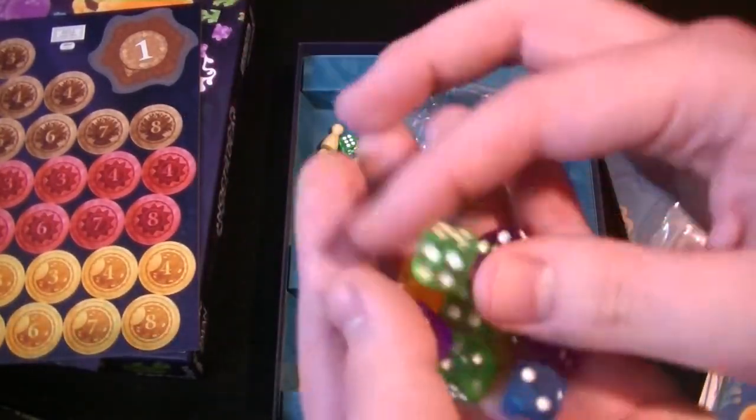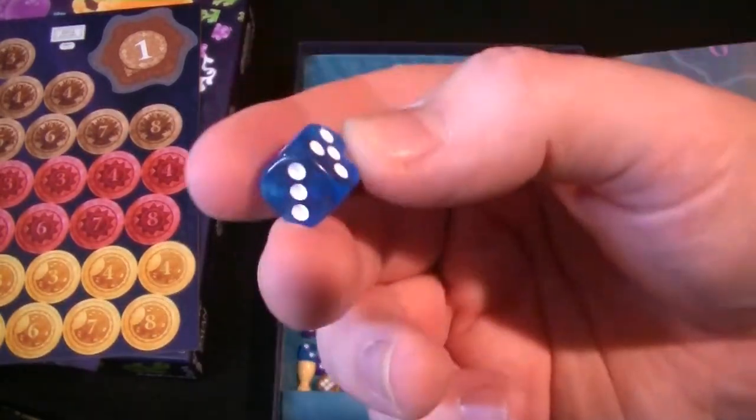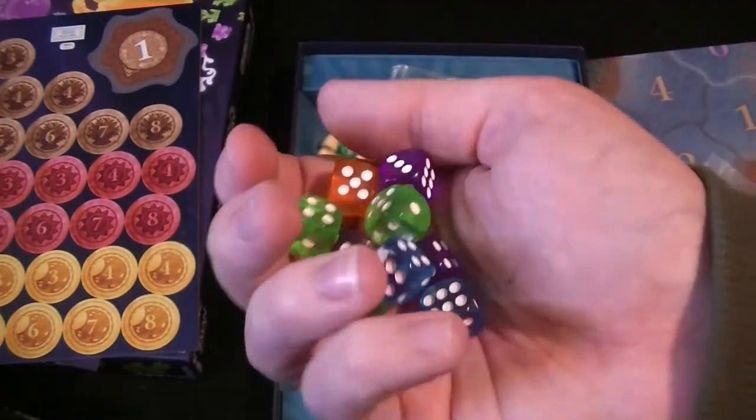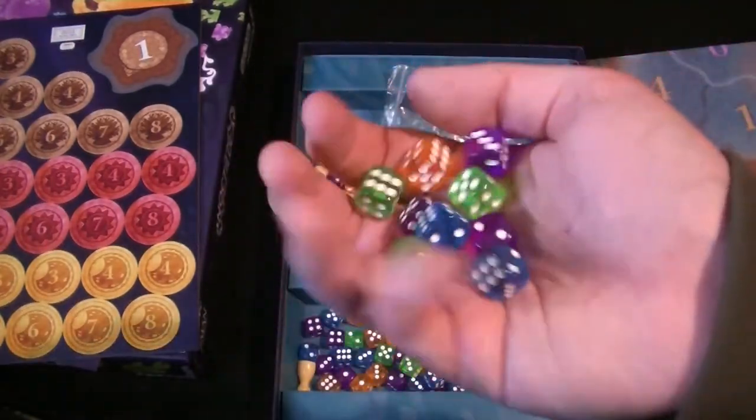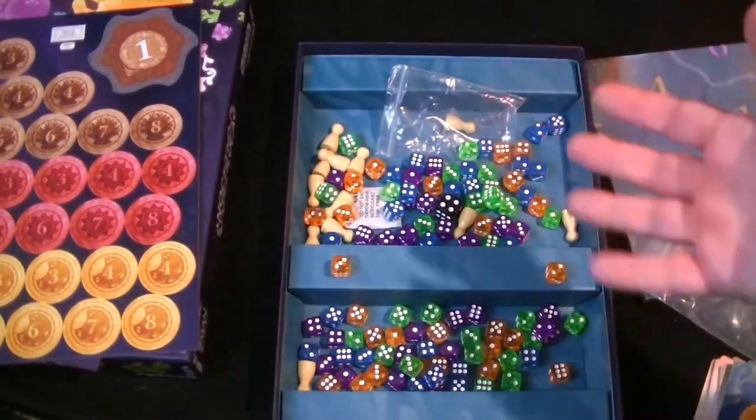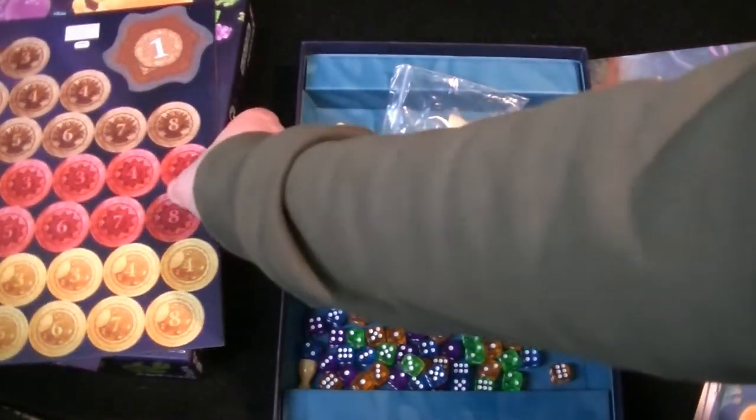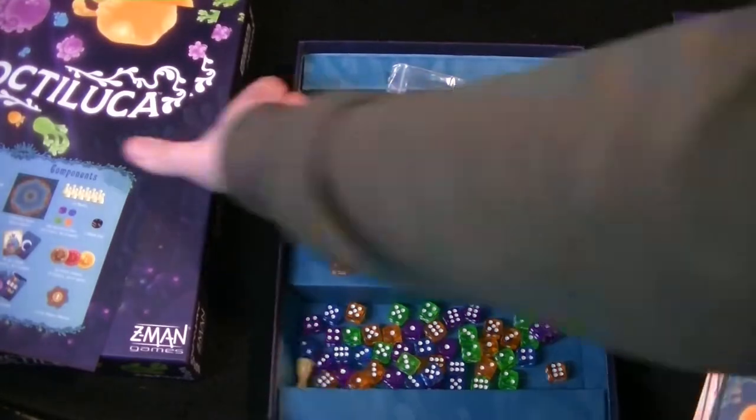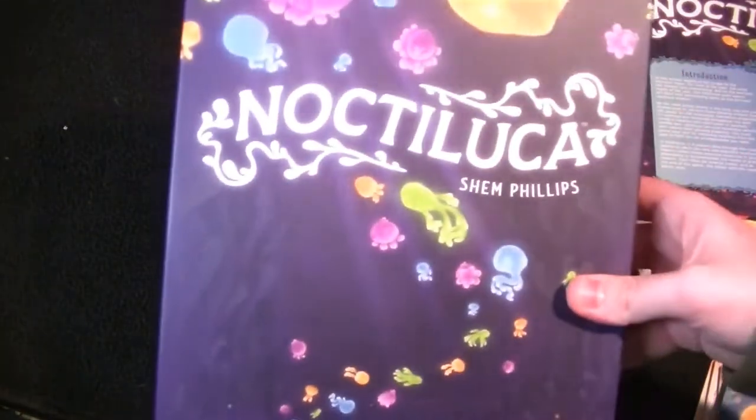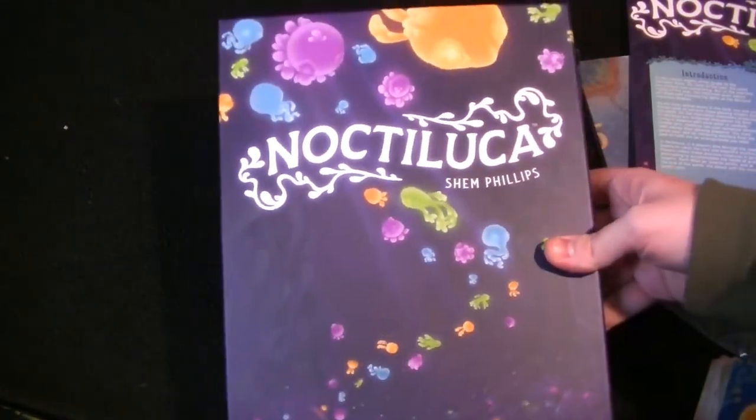They're smaller than average dice, but they're the standard small die. Yeah, pretty nice. Sure they'll look pretty neat on the board. That's everything in Noctiluca, or however you say it. I should have looked that up. I did look it up a while ago when I was planning on unboxing this but never got around to it, and now I've forgotten.